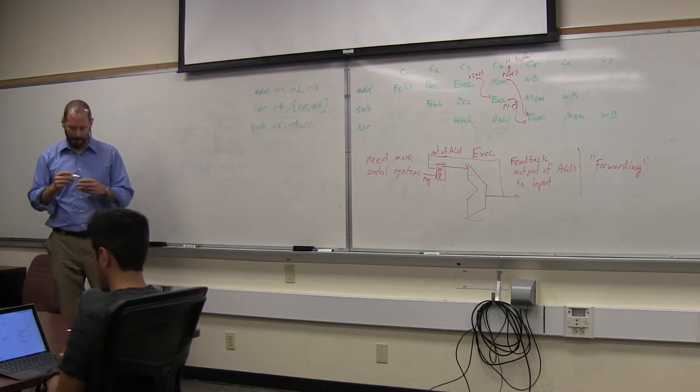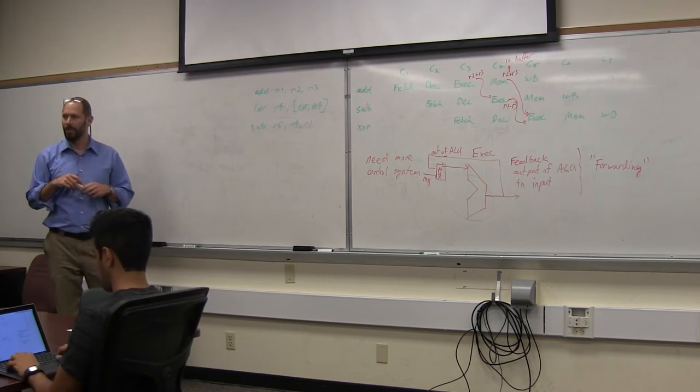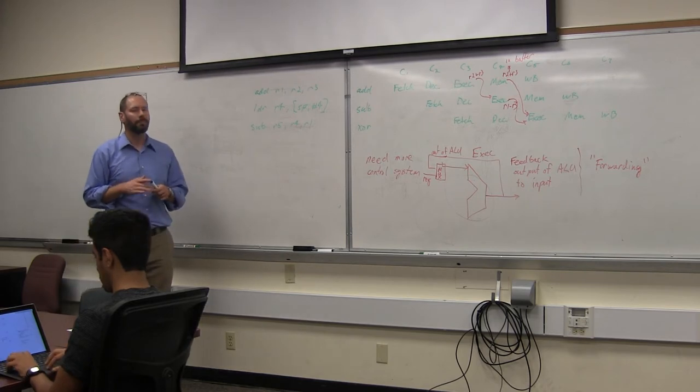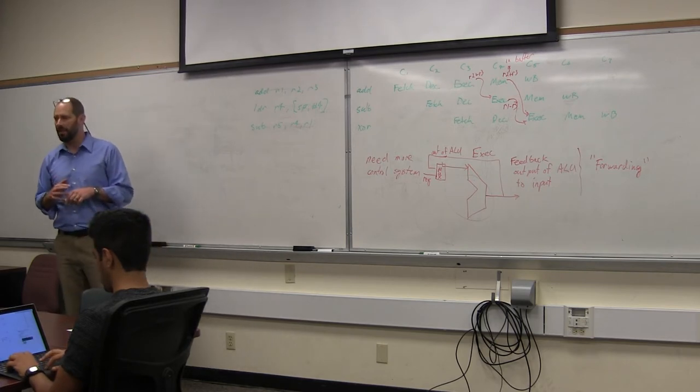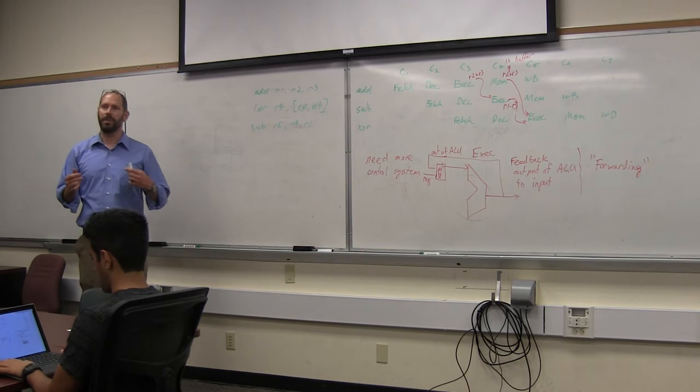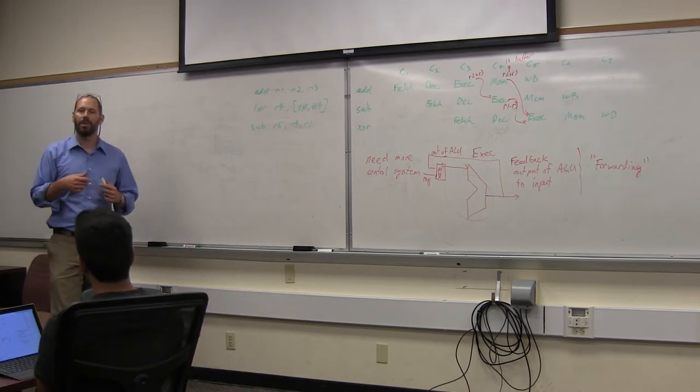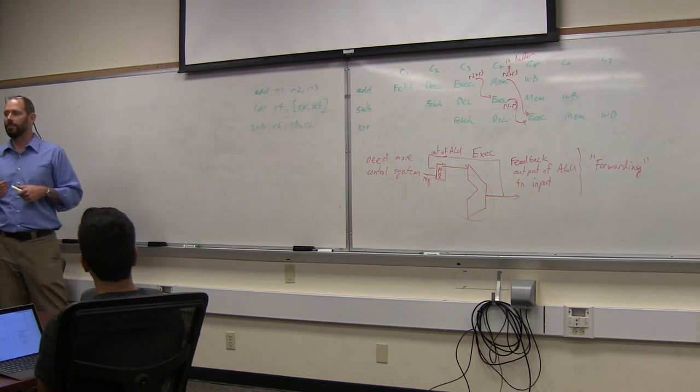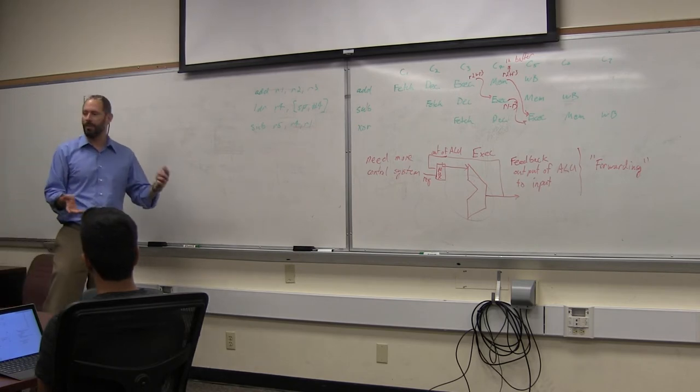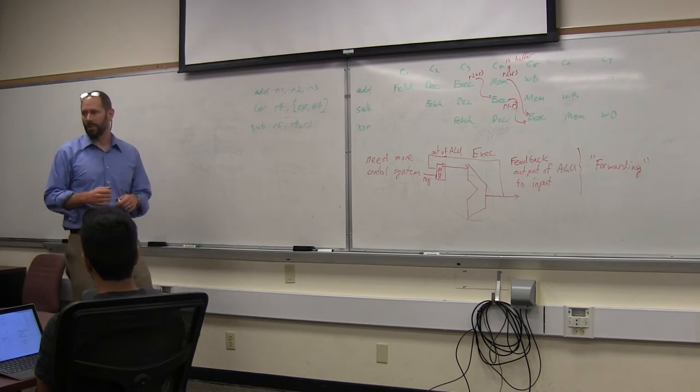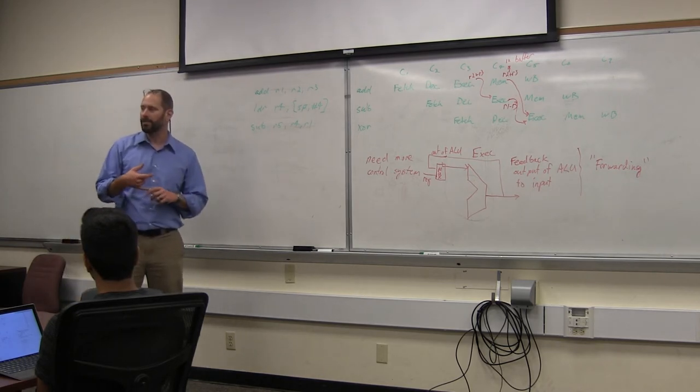More of an organizational thing, are the control hazards from today a type of data hazard? They are different. There is a bit of a data dependency which determines whether or not the branch is going to be taken. But the real hazard is we don't know which instruction to fetch next. So the execution path, do we take the true side or the false side, is what we're ultimately trying to decide with the control path.